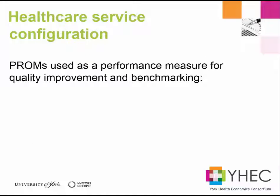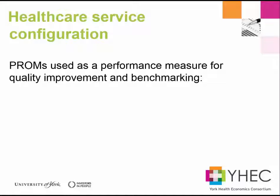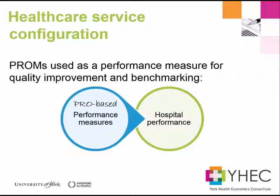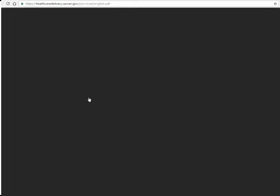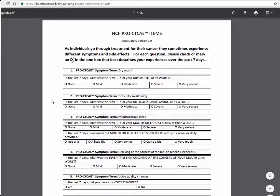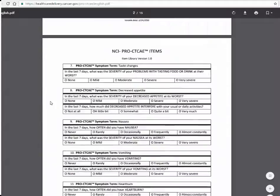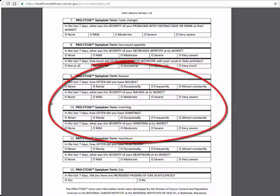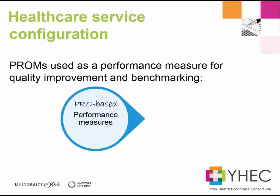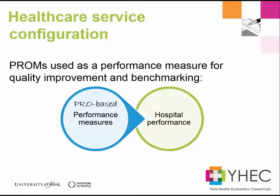One novel approach to using aggregated PROM data to measure healthcare services is the PRO-based performance measure, which effectively combines PRO measures and performance measures. With PRO performance measures, a metric is selected based on an outcome that is important to and derived from patients, and which can then be used to measure hospital performance. For example, the success of new anti-emetic regimens in an oncology clinic could be evaluated against the number of cancer patients recording a given decrease in a score on a PRO measure for nausea and vomiting. Aggregated individual PROM data can therefore be used to provide a measure of how well a healthcare service is performing.